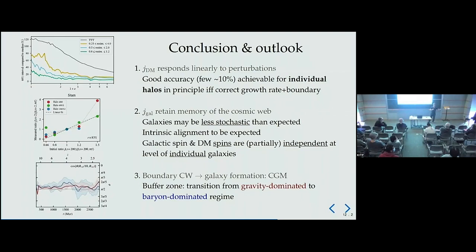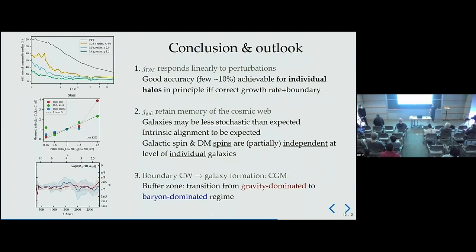Q: Does the linear dependence on perturbations hold for different halo masses? The halos I showed were mostly between 10^13 and 10^14 solar masses. I also tested galaxies hosted in halos of 10^12. For anything below that I would need more computational time. I would expect that at lower masses you have less control over angular momentum because you become increasingly dominated by non-linear interactions — but that's an educated guess to be confirmed.